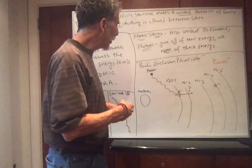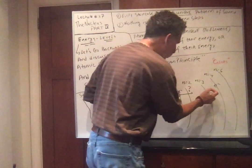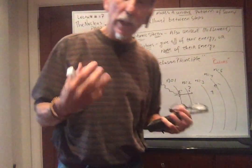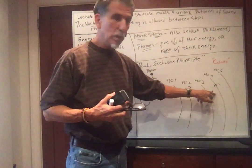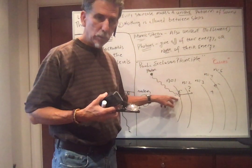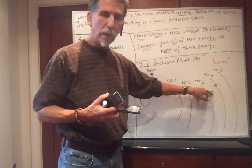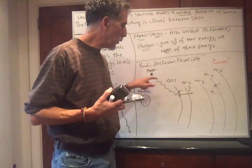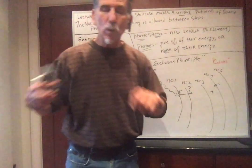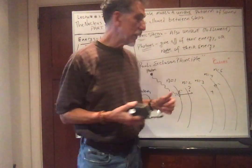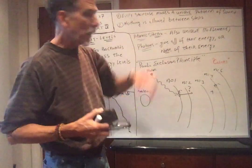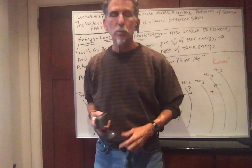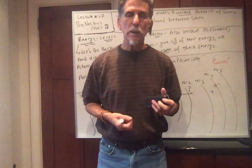So suppose this photon would give all its energy to an electron and put it right there between two levels. What would the electron do? The electron would say, 'I'd really love to have your energy, but you would put me in a place I'm not allowed to go.' So what happens is this photon would not give its energy to the electron because it would put it in a place it's not allowed to go. We would say that this system is transparent to this photon. In other words, the photon tries to excite electrons but would put them in orbits they're not allowed to be — between the steps. So the photon would pass through the system; we would say this system is transparent to this type of radiation.